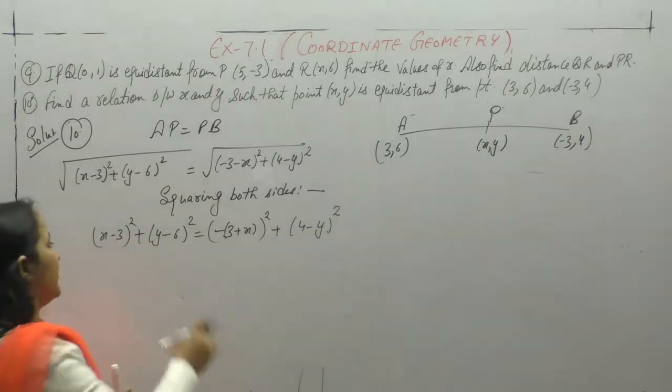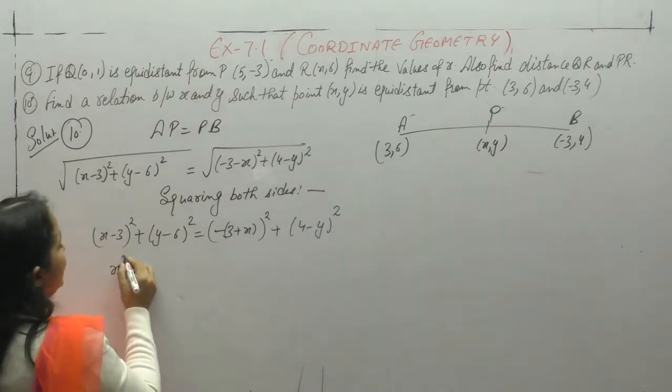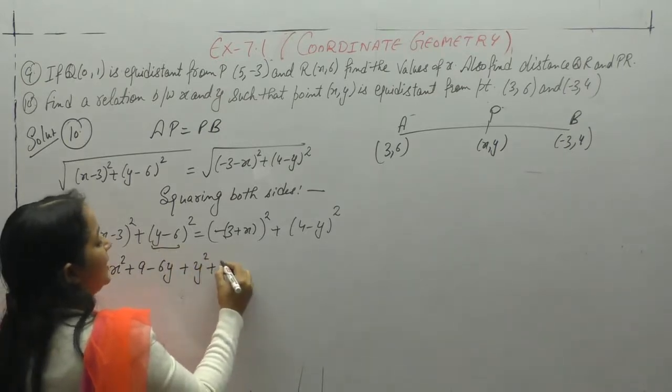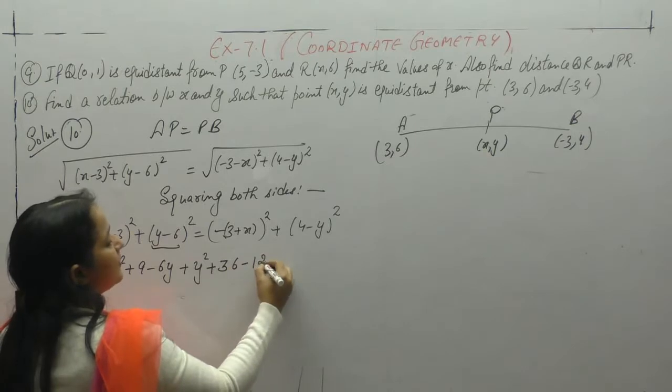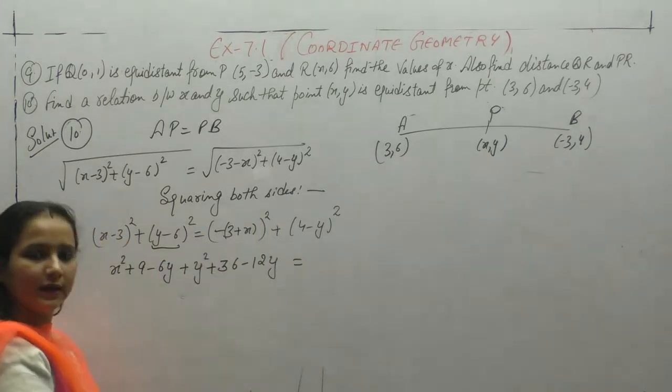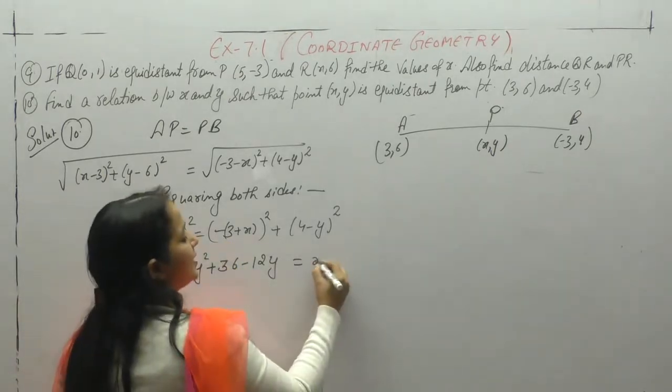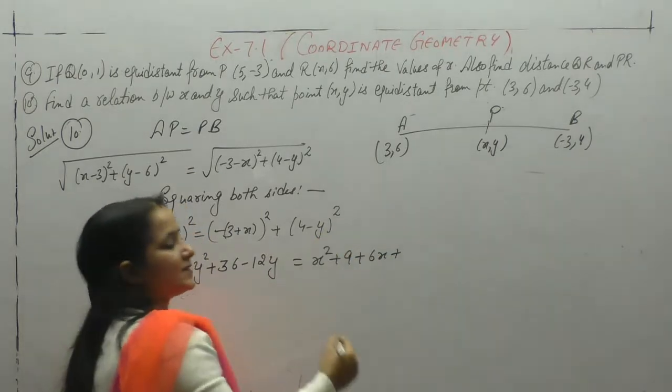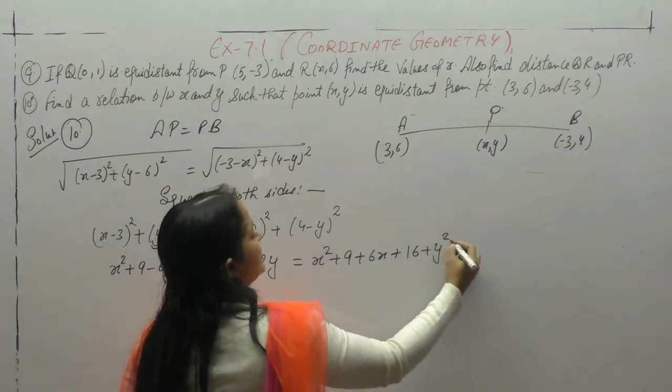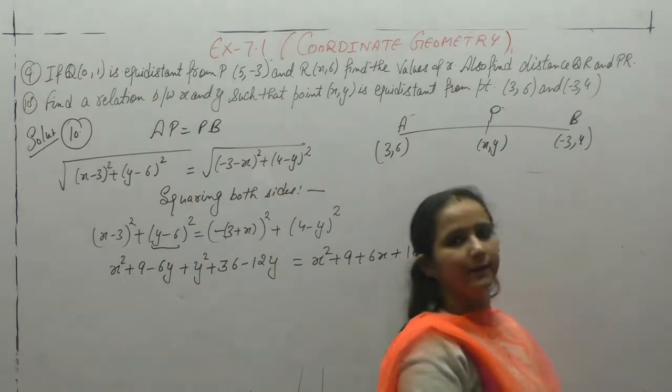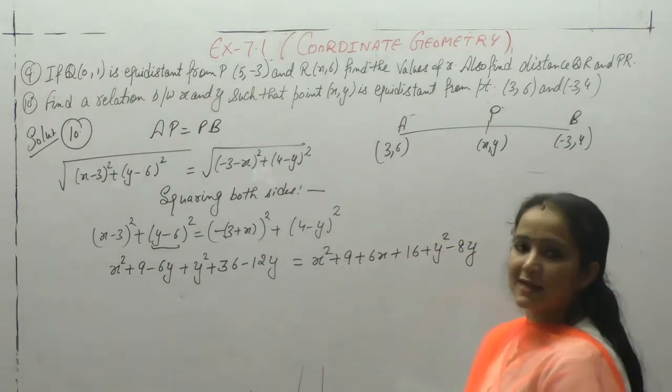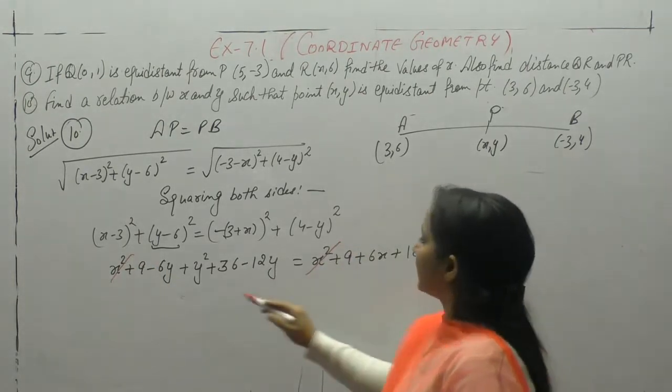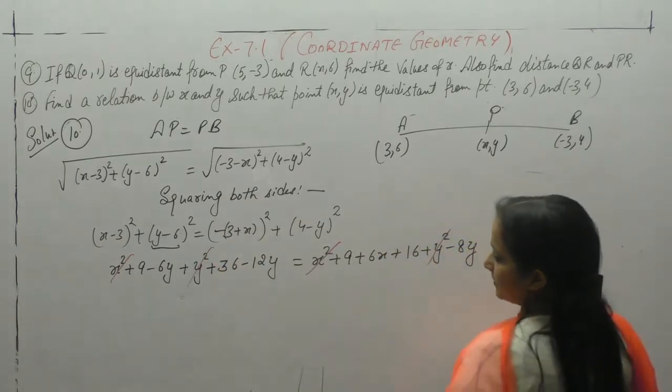Now open the brackets. (a minus b) whole square: a squared plus b squared minus 2ab. x squared plus y squared. Same terms will cancel. x squared plus y squared cancel. y squared cancel.